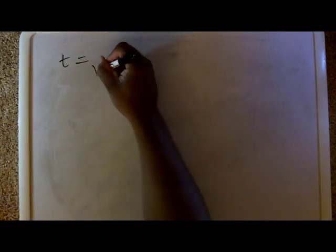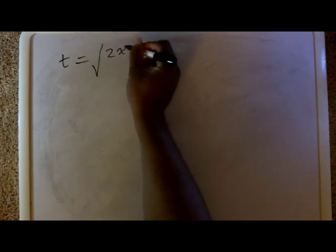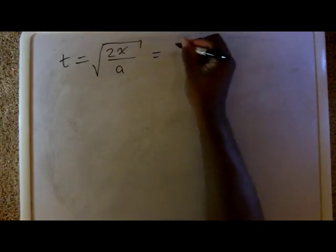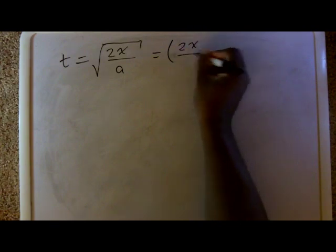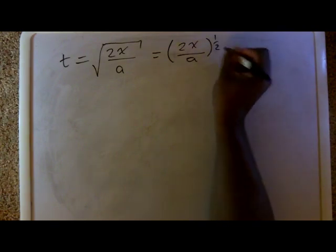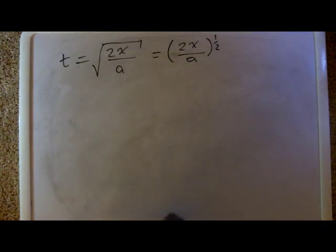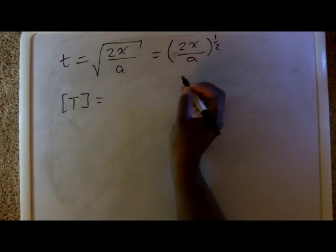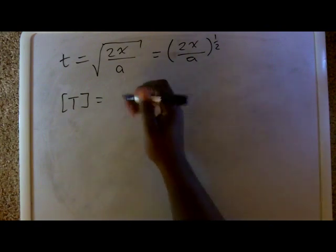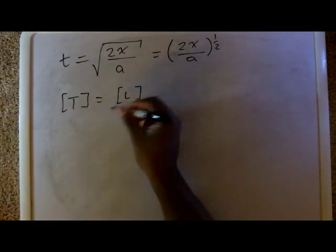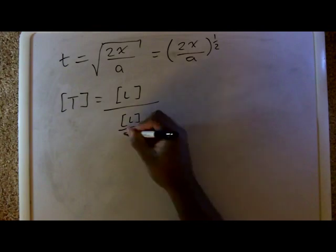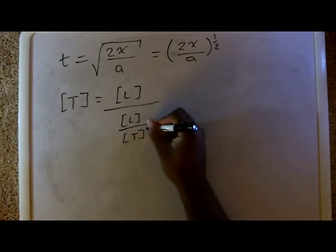Now let's try one that's a little bit more difficult. Time is equal to the square root of two times x over a, which is acceleration, displacement over acceleration. I'm going to rewrite this to this. So we know that t is equal to t. And we know that I'm going to write this in the fraction form first. We know that x is equal to l because the length. And acceleration is length over time squared.